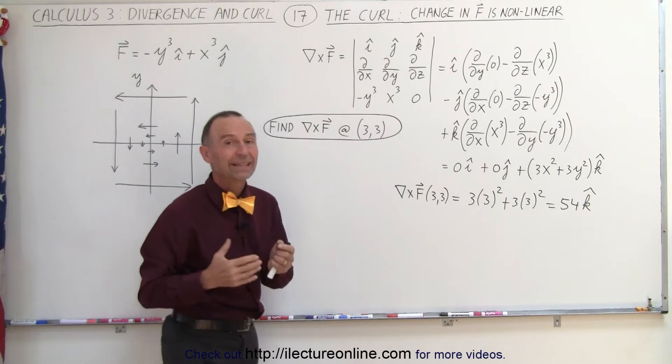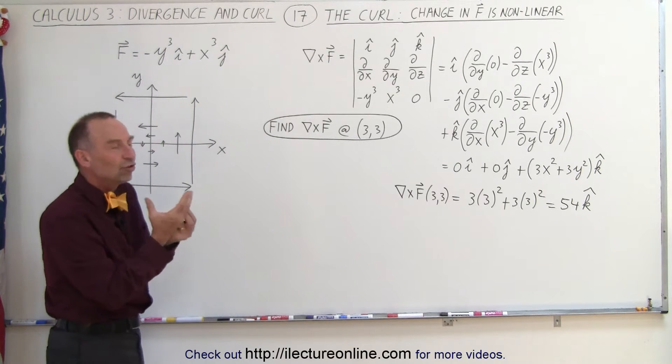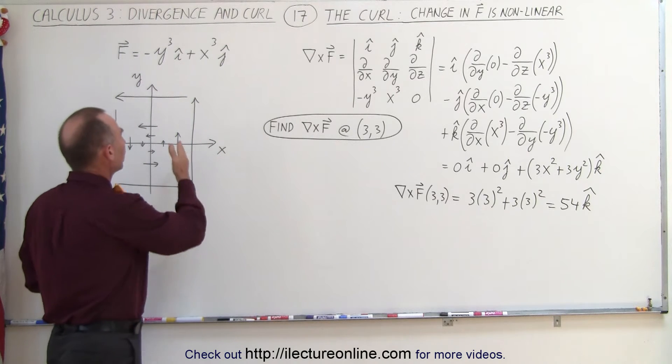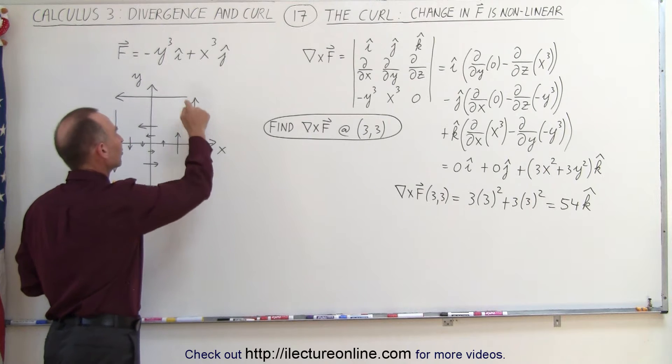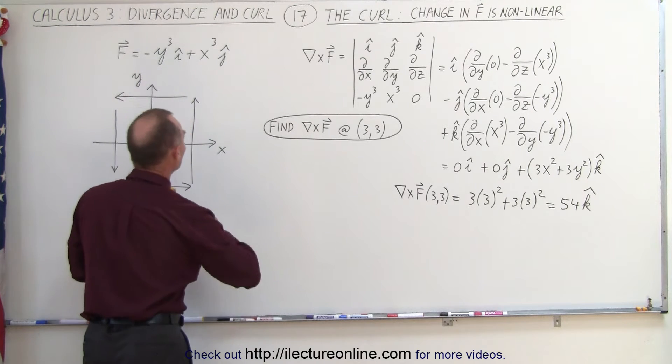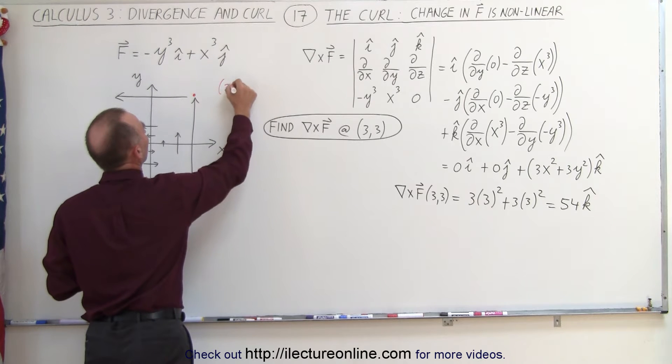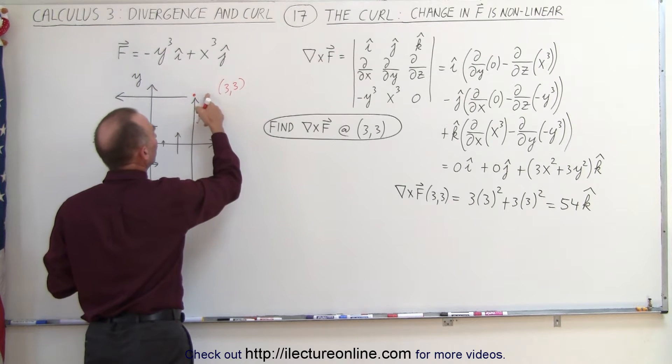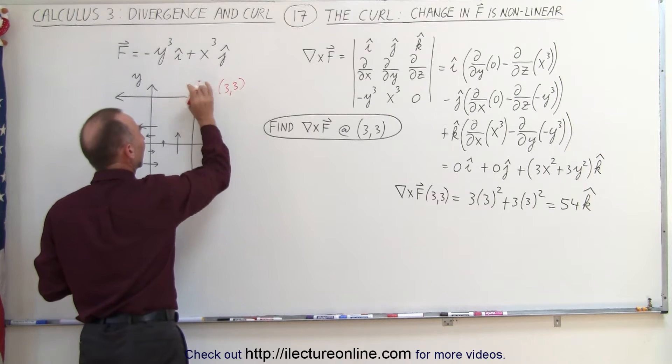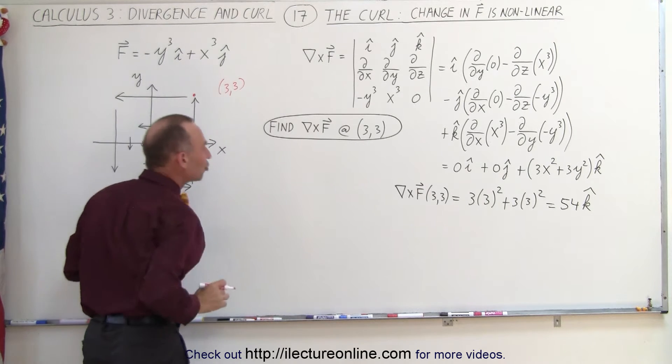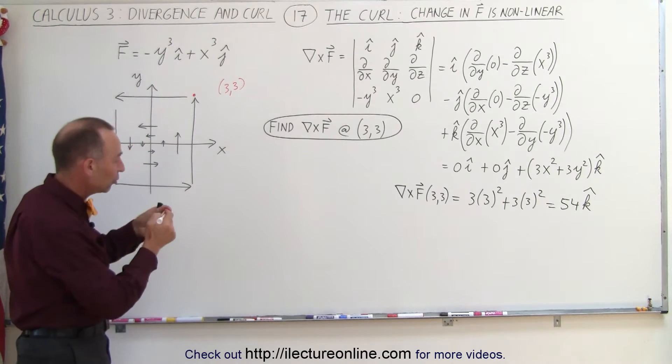So the magnitude gives us the change in the magnitude of the vector field when we move in the x direction, move in the y direction at that particular spot. Now the spot we're talking about is the spot right here, which is the point 3, 3. So if we change a little bit in the x direction, a little bit in the y direction, add that together, divide by how far we change, that gives us the magnitude.